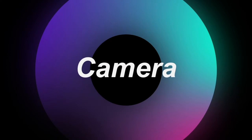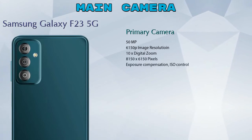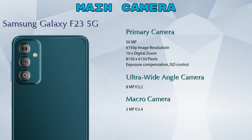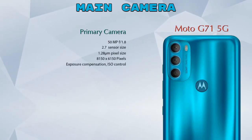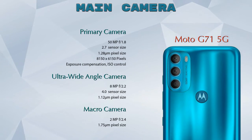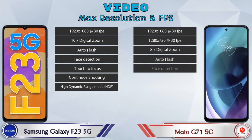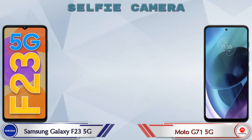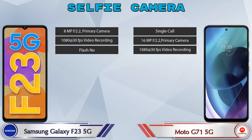Now let's see the details about cameras. Talking about the rear camera, the Galaxy F23 5G has three cameras: a primary camera, an ultra-wide angle camera, and a macro camera. The G71 5G also has three cameras: a primary camera, an ultra-wide angle camera, and a macro camera. For video, the Galaxy F23 5G has 7 different features and the G71 5G has 9 different types of features. Both phones have a single front selfie camera with three different features available.